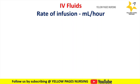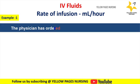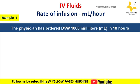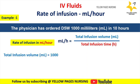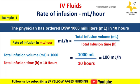Let's do a calculation for rate of infusion in ml per hour. Example 1: the physician has ordered D5 water 1000 ml in 10 hours — calculate the rate of infusion in ml per hour. The formula to calculate ml per hour is: total infusion volume in ml divided by total infusion time in hours. Here, total infusion volume is 1000 ml and total infusion time is 10 hours.